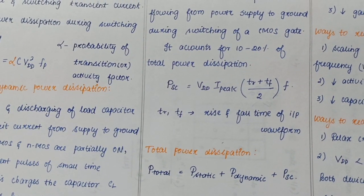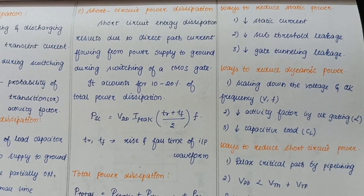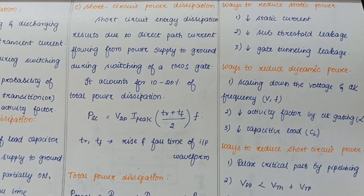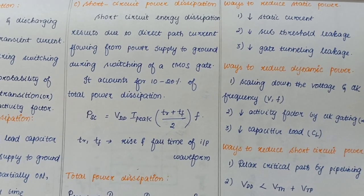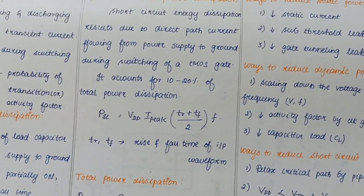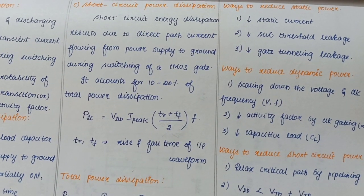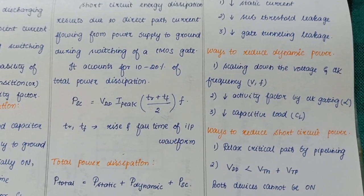Now, how to minimize the three different powers? First, static power. We know P equals I static into VDD. Static power is directly proportional to static current, so to decrease power, we need to decrease the subthreshold current.